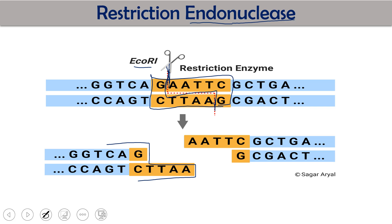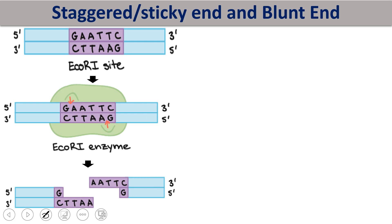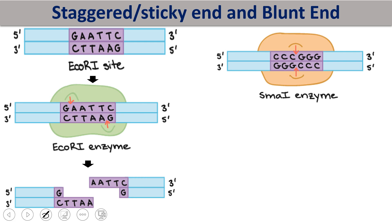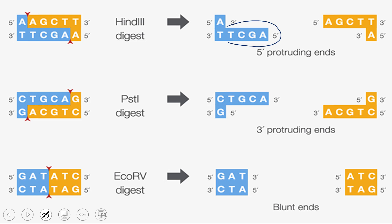As a result we get a staggered end, also called a sticky end. Overall, there are three different types of products: staggered end and blunt end. In a staggered end there are two types: five prime protruded and three prime protruded. For EcoRI we get a sticky end. For SmaI, which recognizes a six base pair sequence and cuts between G and C, we get a blunt end DNA. In genetic engineering, staggered ends are preferred.